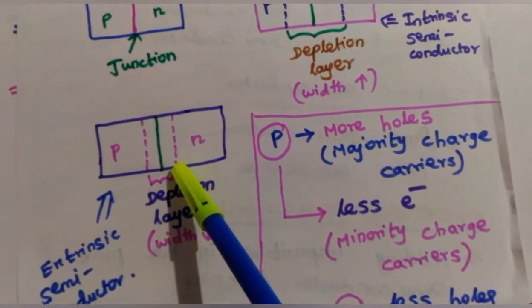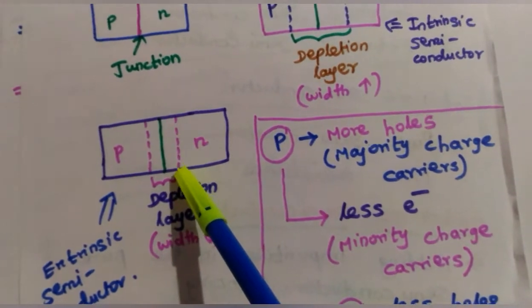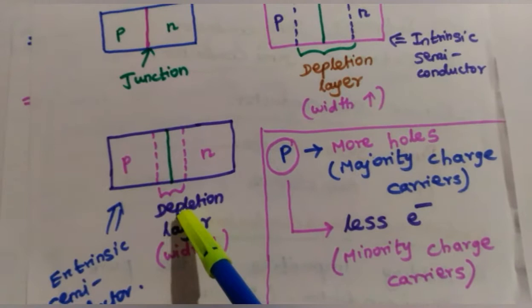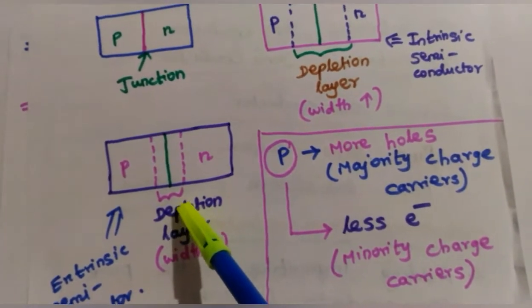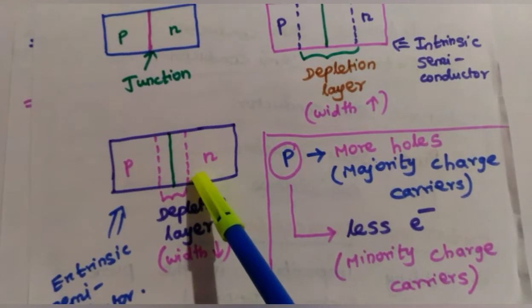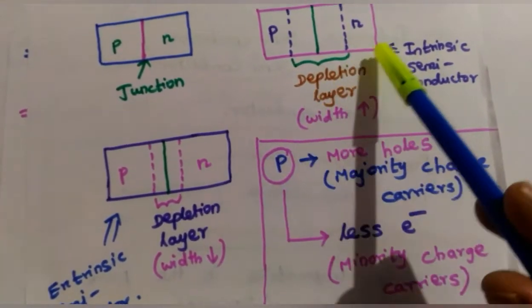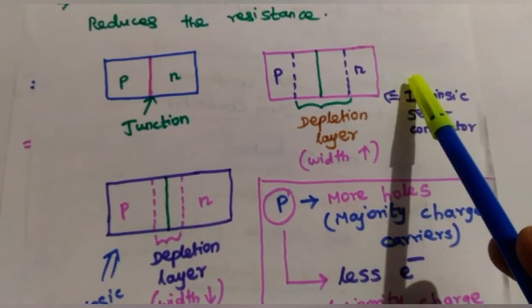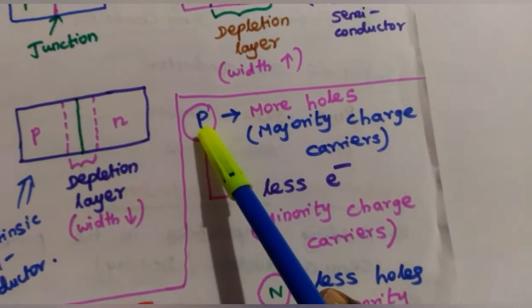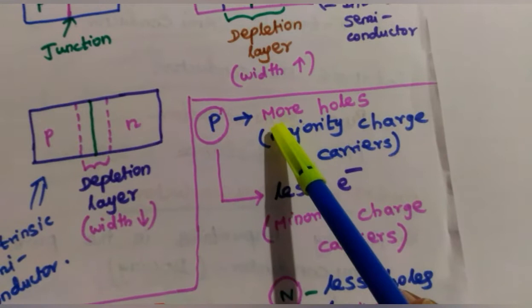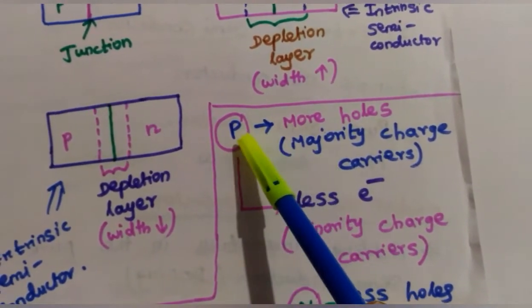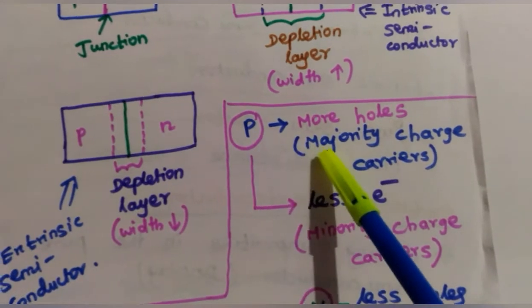Because of the addition of impurity atoms into the P and N layers, the depletion layer width is reduced, so resistance is reduced and current flowing through the extrinsic semiconductor is more compared to the intrinsic semiconductor. In the P-type material, holes are the majority carriers — there are more holes available in the P-type material.